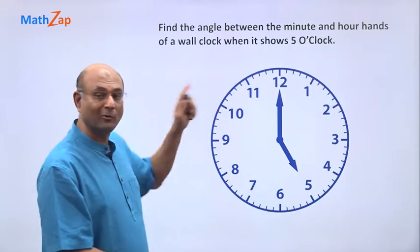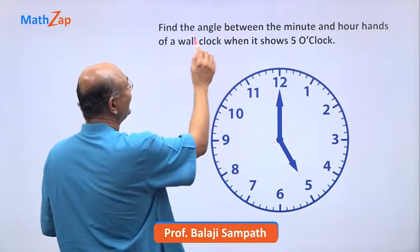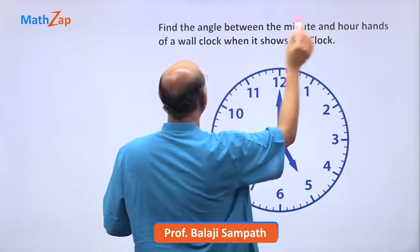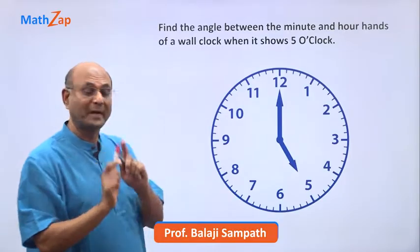Let us now look at this question about a wall clock. Find the angle between the minute and the hour hands of a wall clock when it shows 5 o'clock.